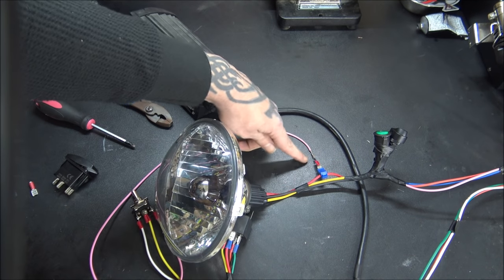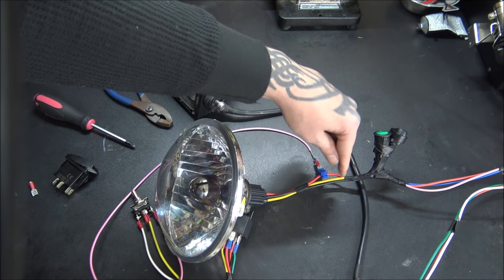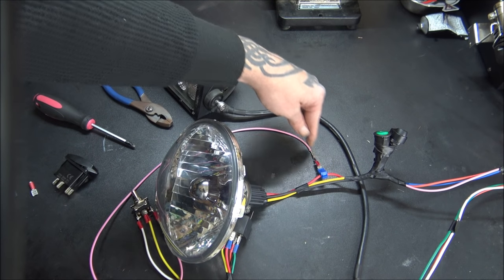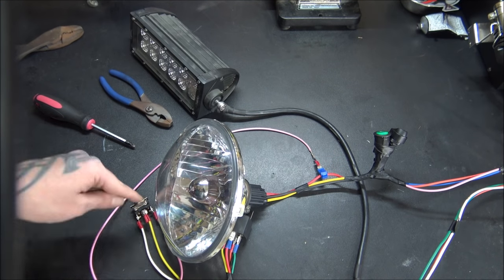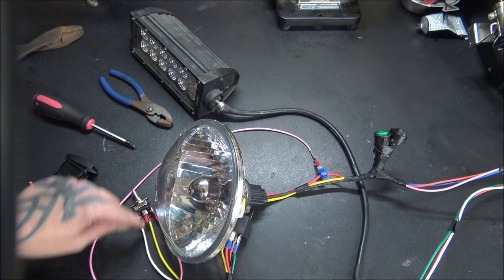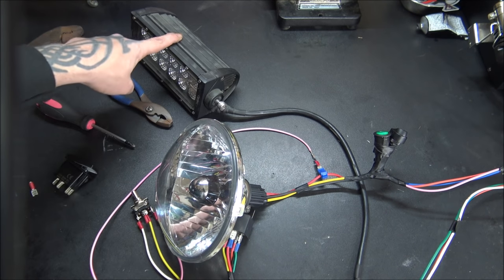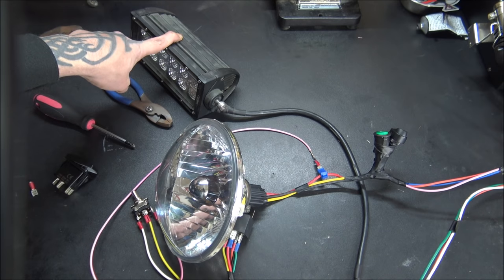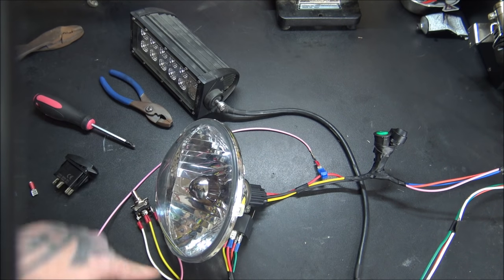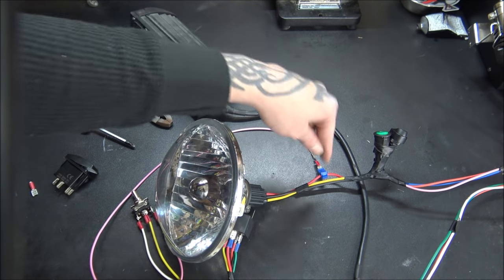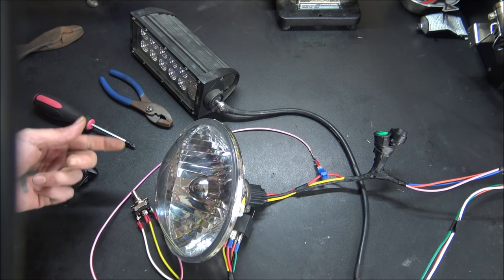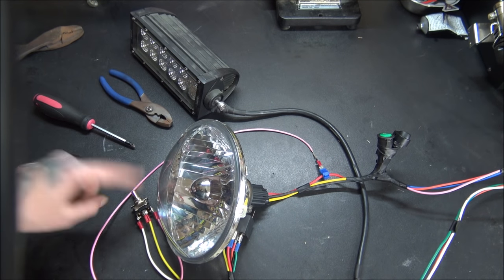And what this is going to do with the diode in place, when you turn on your high beams, it's going to allow current to come through this pink wire and then over into the yellow wire to go to your relay and turn on your light bar. But the diode won't allow power to come back through the opposite direction. So it won't turn your headlight on when you flip the switch.